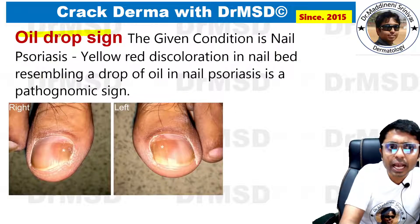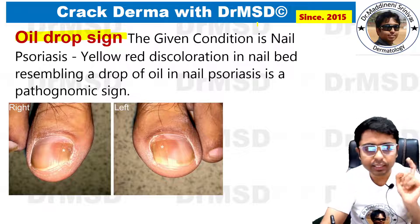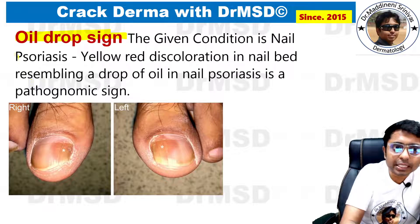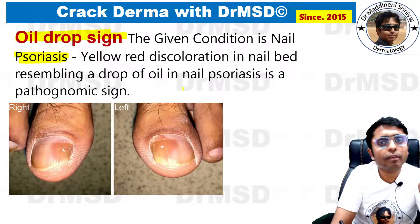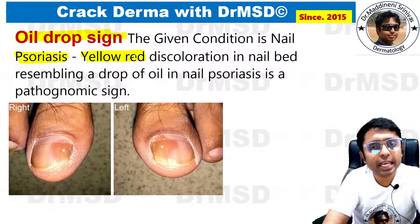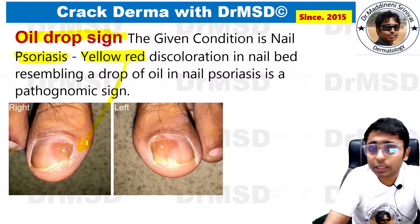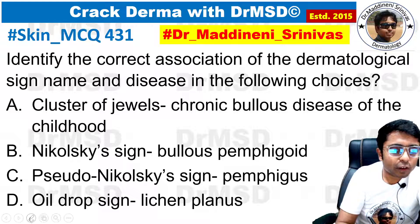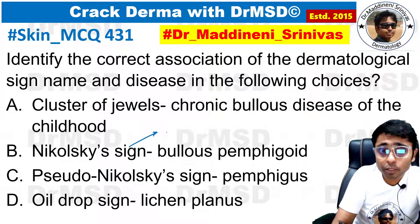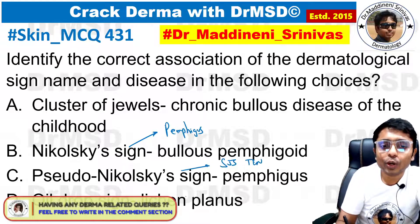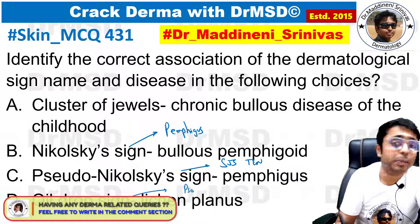What is oil drop sign? I have explained it in detail and will leave the link in the description below. This is seen in papulosquamous disorder — that is psoriasis — in which in the nail bed, the appearance of an oil drop-like feature can be noted, which appears clinically as an altered discoloration as you can see here. This is a pathognomonic sign for nail psoriasis. To summarize: Nikolsky sign is positive in Pemphigus group of disorders, which are intra-epidermal blistering disorders; pseudo-Nikolsky sign is positive in SJS and TEN; and oil drop sign is positive in psoriasis but not lichen planus.